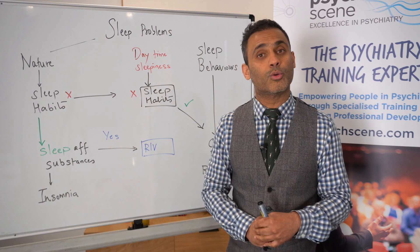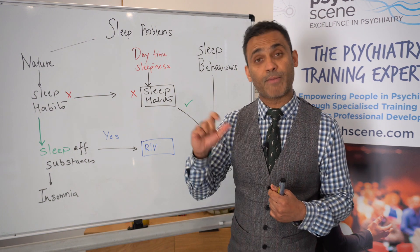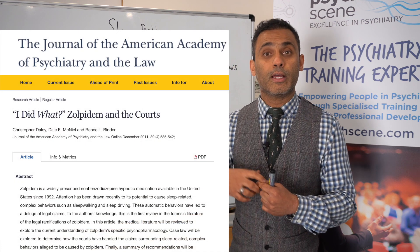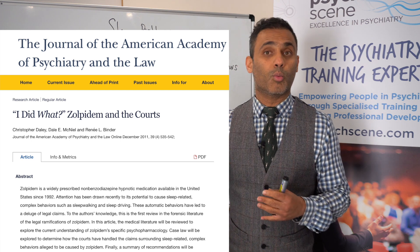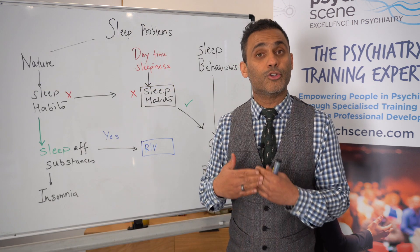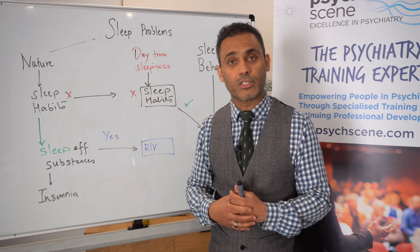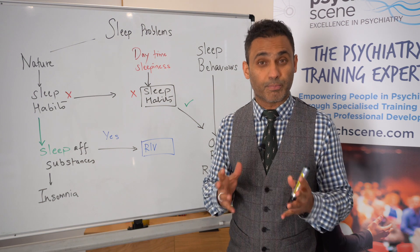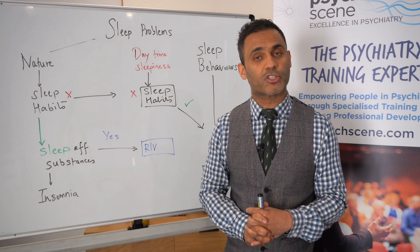Then we have what's known as Z drugs such as Zopiclone and Zolpidem. Some individuals can have paradoxical reactions, and there have been cases where the individual can have complex behaviors they don't remember with Zolpidem or Zopiclone, but these can be useful agents for certain patients. Both benzodiazepines and Z drugs can be associated with the risk of dependence and should therefore be cautiously prescribed.